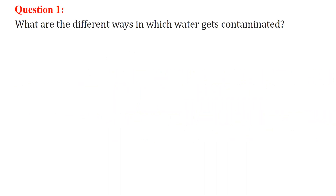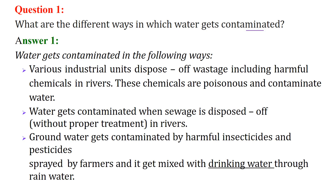What is the different way in which water gets contaminated? There are certain ways in which water gets contaminated. The major one is the disposal from various industrial units, because these are very harmful chemicals that come out of the industrial units and they directly go into the rivers. These chemicals are very poisonous and they contaminate the water.